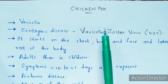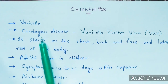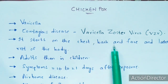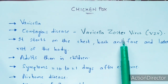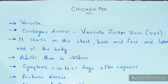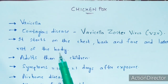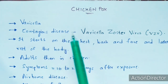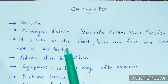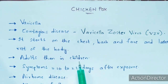Normally, when this virus enters into your body, the symptoms will firstly be seen in the chest region, back region, and the face region. It starts on the chest, back, and face, and later all of these symptoms can be seen in the rest of the parts of the body. The main sign you can see is red color spots which appear in all parts of the body. This chickenpox can be seen mostly in adults than in children.